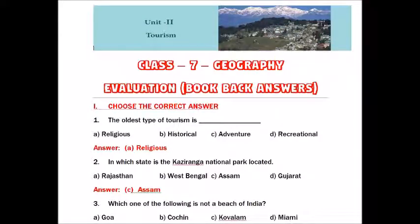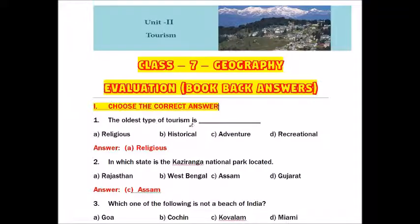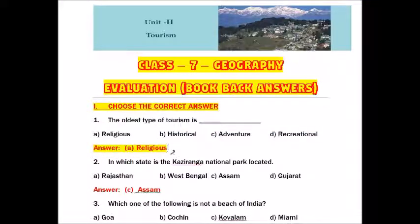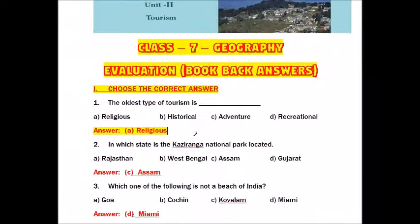Roman number one: Choose the correct answer. Question number one: The oldest type of tourism is — Religious, Historical, Adventure, or Recreational? The answer is Religious. The oldest type of tourism is Religious tourism.